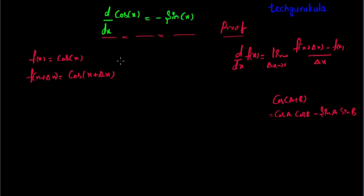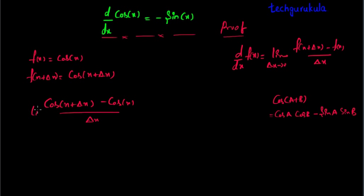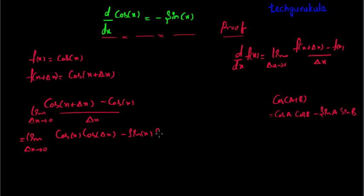So let us substitute f of x plus del x and f of x into this and apply limit del x tends to 0 with denominator del x. So we will have cos of x plus del x minus cos of x, whole divided by del x, as limit del x tends to 0. The equation will be equal to the differentiation of cos of x. So we can rewrite this with limit del x tends to 0: cos x cos del x minus sin x sin del x minus cos x, whole divided by del x.